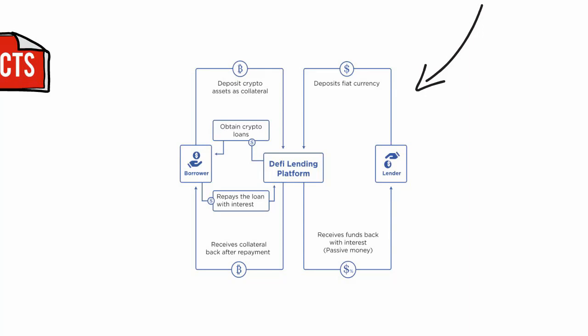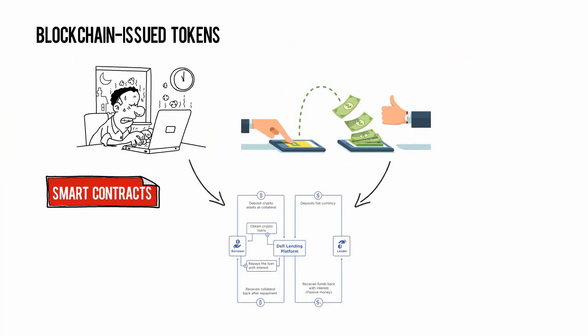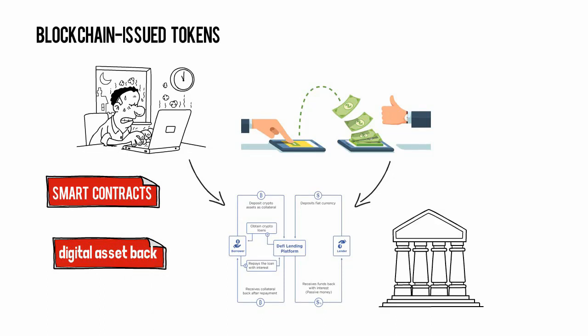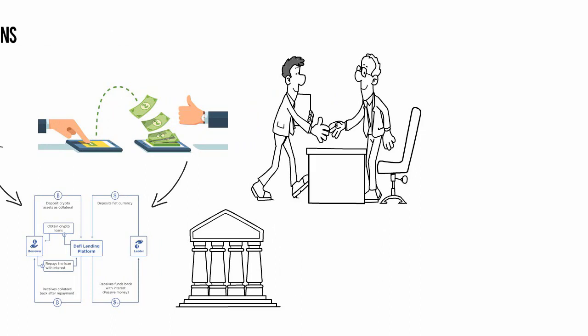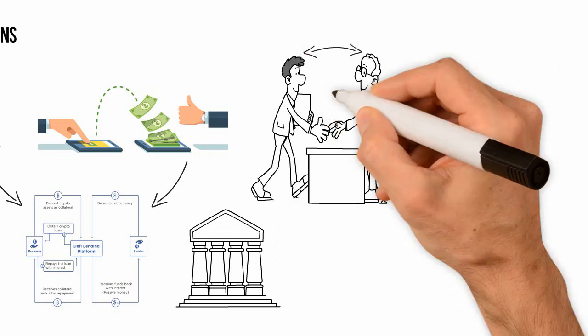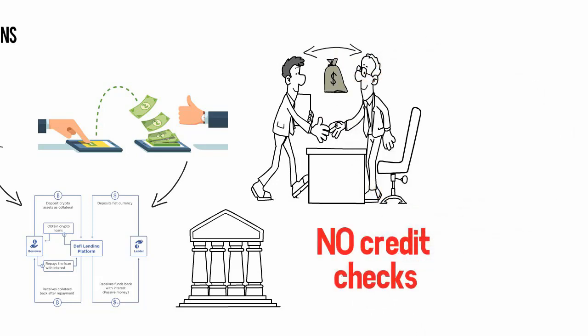The idea behind open loan lending protocols is simple. Users deposit their digital assets onto the platform. When someone else borrows those assets, they earn interest. When the loan is over, they get the digital asset back. It's kind of like a bank, only instead of intermediaries, the smart contracts dictate the loan terms, connect lenders and borrowers, and distribute the interest.